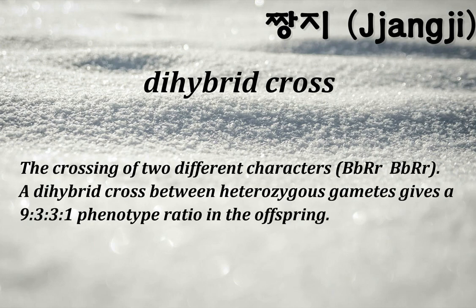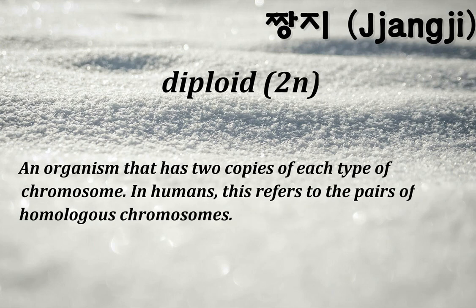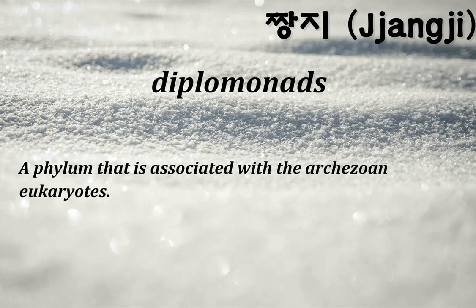Dihybrid cross: the crossing of two different characters, BBRR × bbrr. A dihybrid cross between heterozygous gametes gives a 9:3:3:1 phenotype ratio in the offspring. Diploid (2N): an organism that has two copies of each type of chromosome; in humans this refers to pairs of homologous chromosomes.